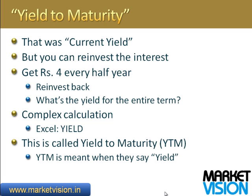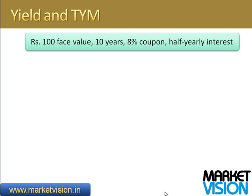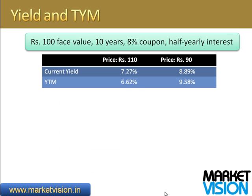This is what they mean when they say yield in bond markets, bond articles, or references — it's the yield to maturity (YTM). For example, taking the same bond we've discussed: 10-year, 8% coupon, 100 rupee face value, half-yearly interest. The 110-rupee price gives a current yield of 7.27% and a yield to maturity of 6.62%. At 90 rupees, the current yield is 8.89% and the yield to maturity is 9.58% — it's much higher because there is a capital gain involved.